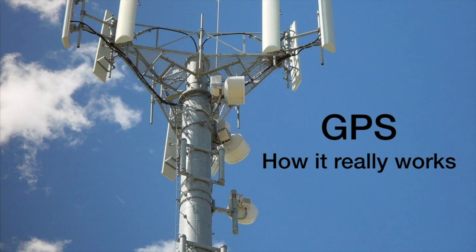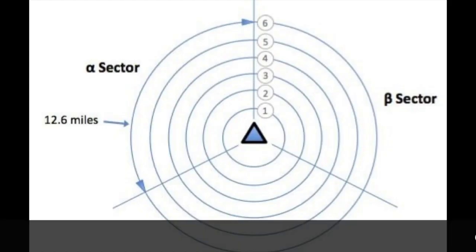GPS is actually all ground-based technology, and the way it works is they use a method called triangulation. Let's look at the shape of a cell phone tower. Take note that it has a shape of a triangle. Each side of the triangle is called a sector. These sectors are labeled by the Greek letters alpha, beta, and gamma.